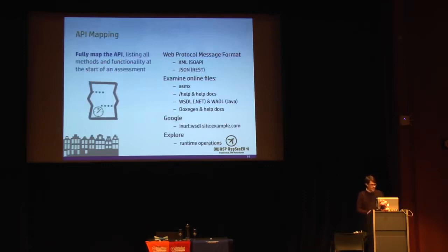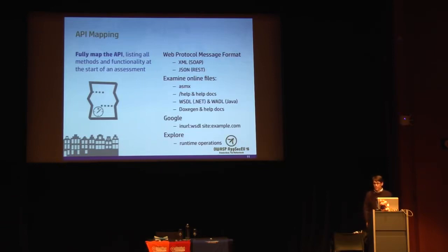Most APIs today are using the web protocol HTTP, which is true for REST and SOAP. As you're mapping out your API, you'll want to figure out what protocol it's using and understand the message format — for SOAP, it's typically mandatory XML; for REST, it's typically JSON. Examine any online files for your backend system, such as WSDLs or ASMX files for .NET, or WADL files for Java.